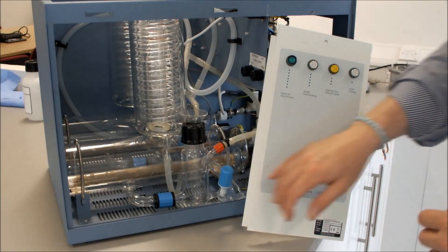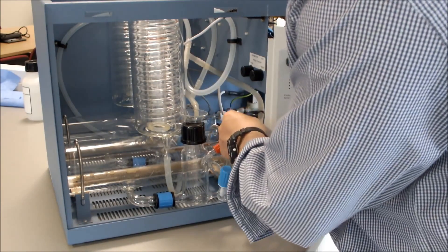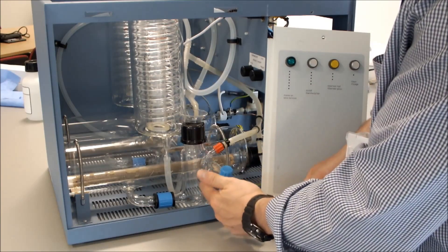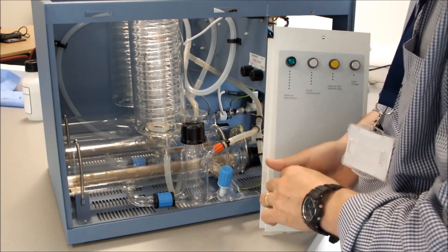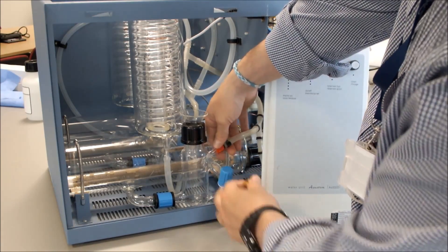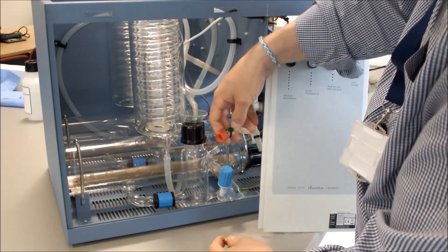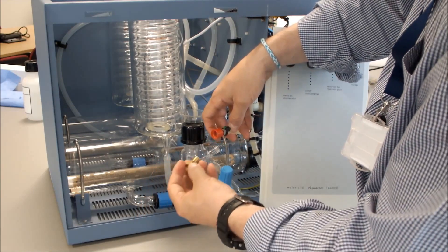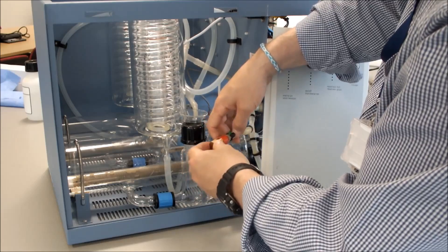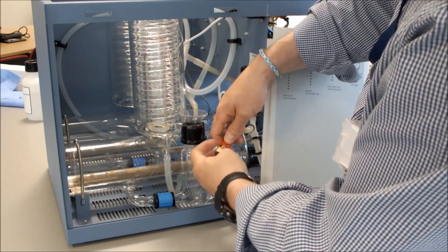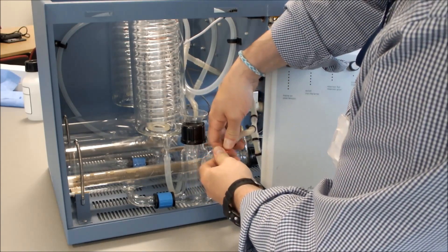The next thing to do is to locate the tubing which connects to the boiler level control. It's labelled number five. We need to take that off. We then fit our plug from our water conversion kit to the tubing.